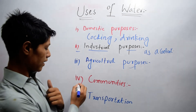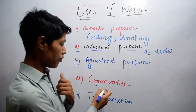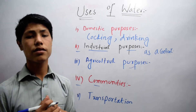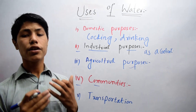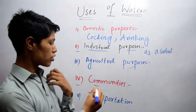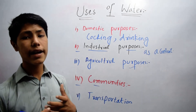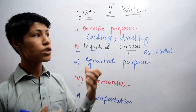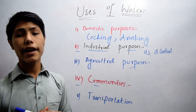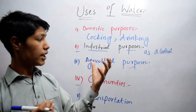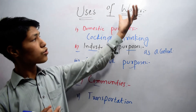The fourth one is communities. Communities means that we use water for fire — if there is a fire in some place, we use water to remove it. And also for cleaning the streets, we use water.